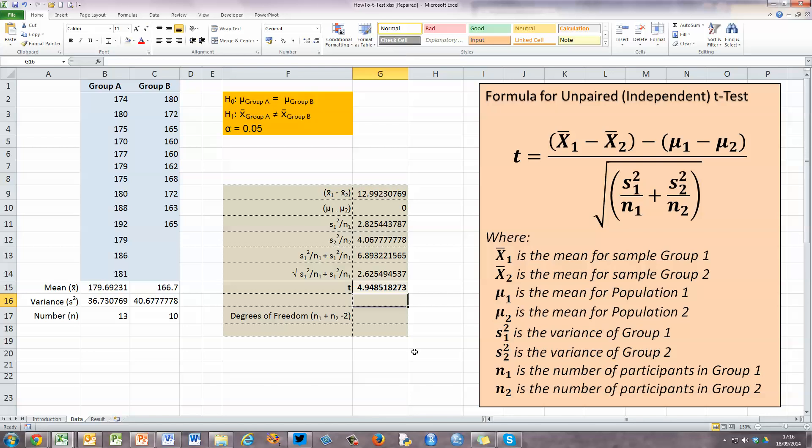Now, before we use that to determine if this represents a significant difference between these two samples or not, we need to calculate the degrees of freedom. And in tests like this for unpaired or independent t-tests, our degrees of freedom are the number of participants in n₁ plus the number of participants in group 2, which is n₂. And then because there's two groups, we take away 2. So n₁ plus n₂ minus 2.